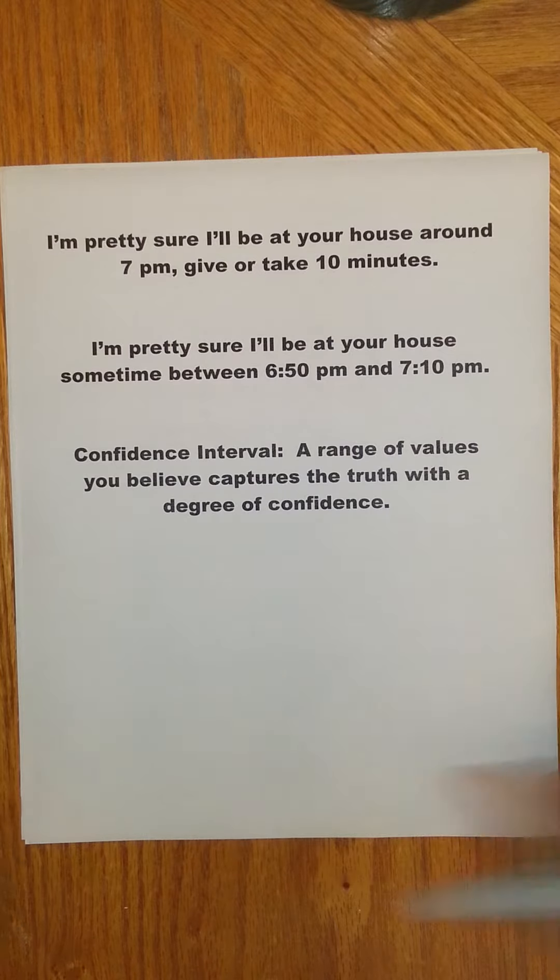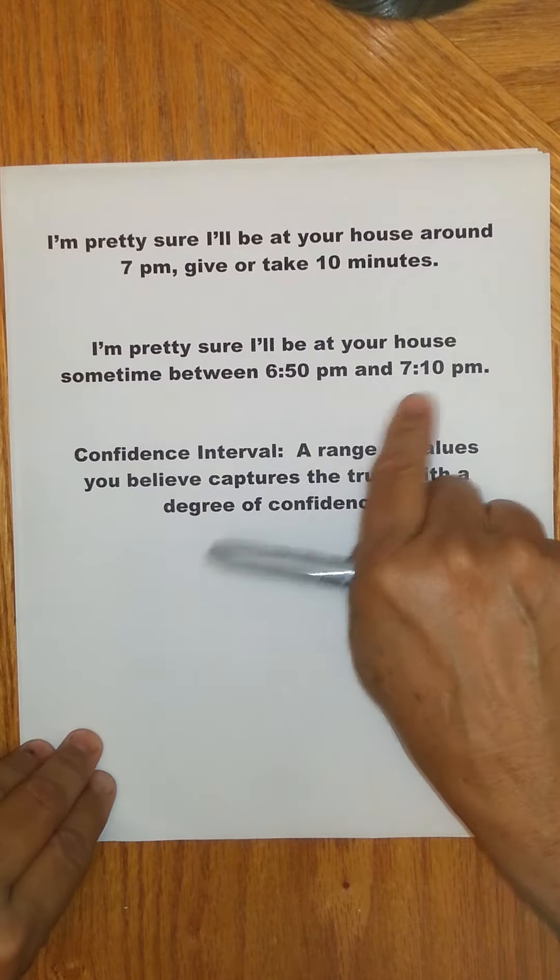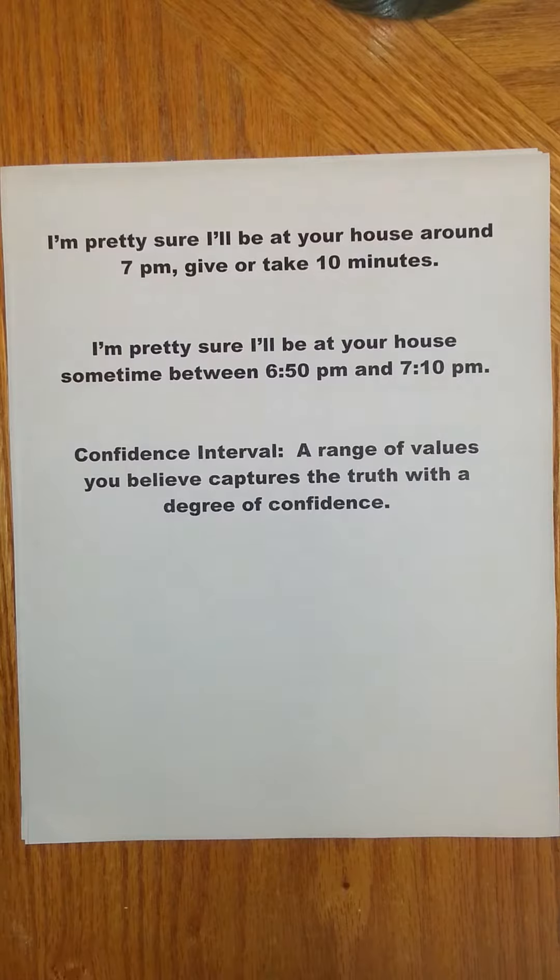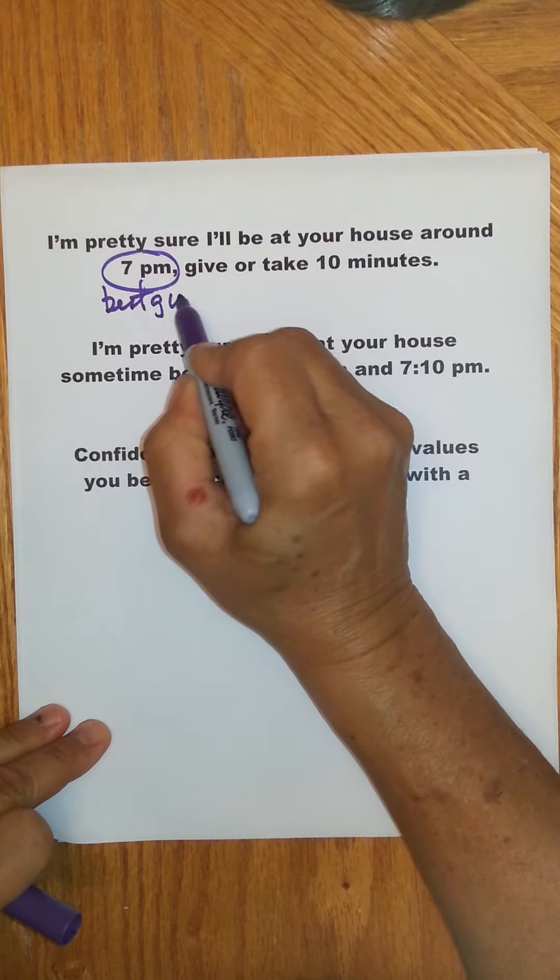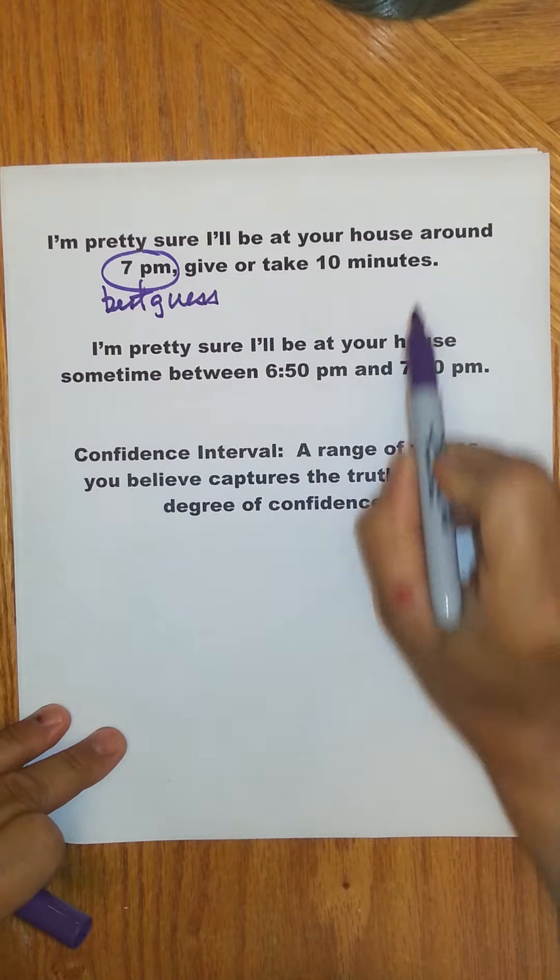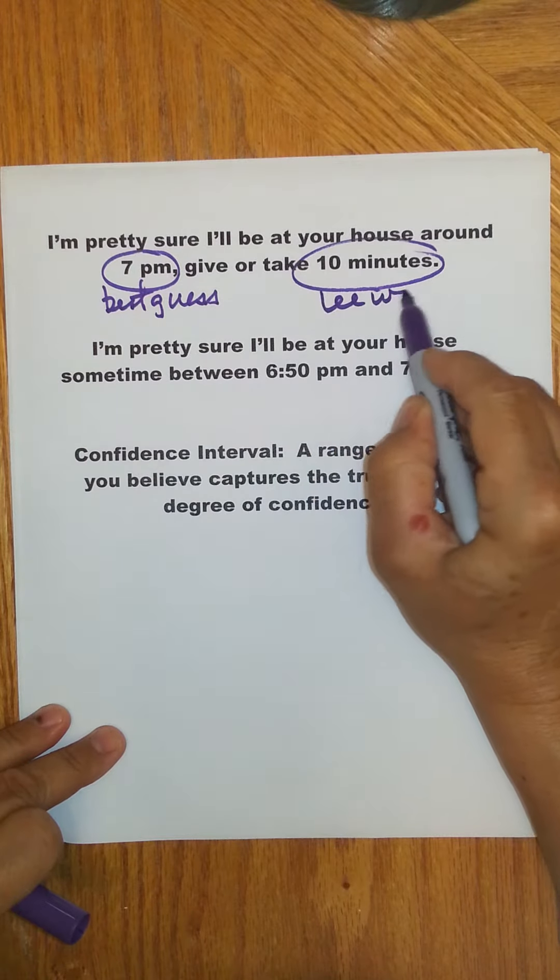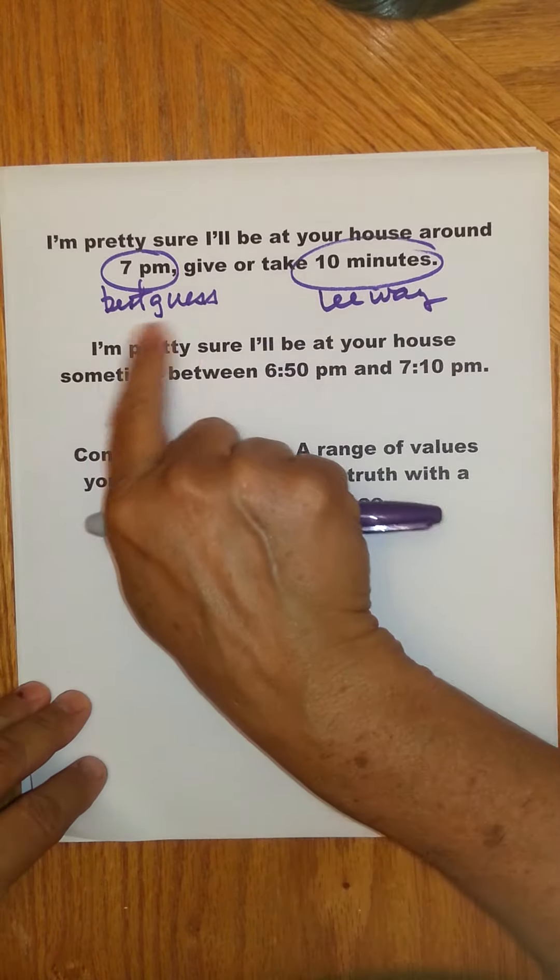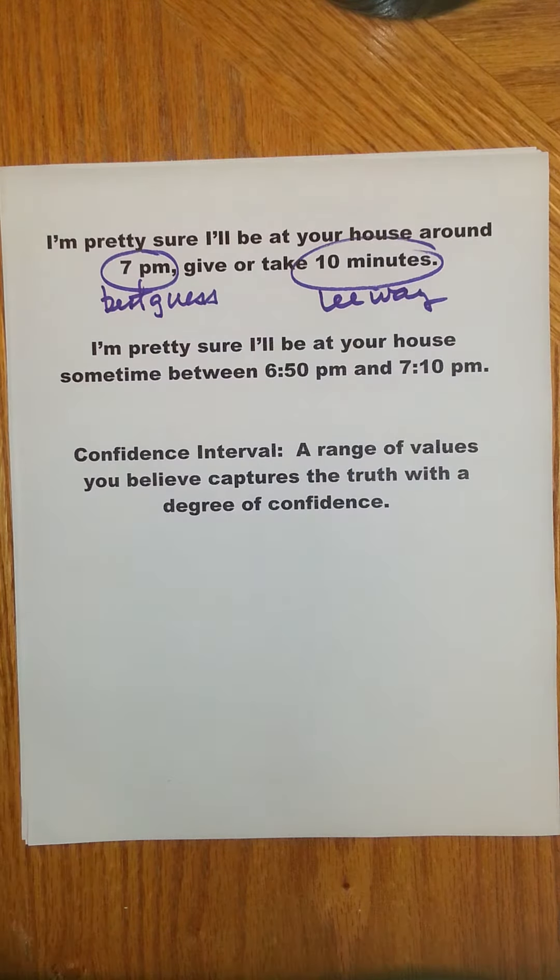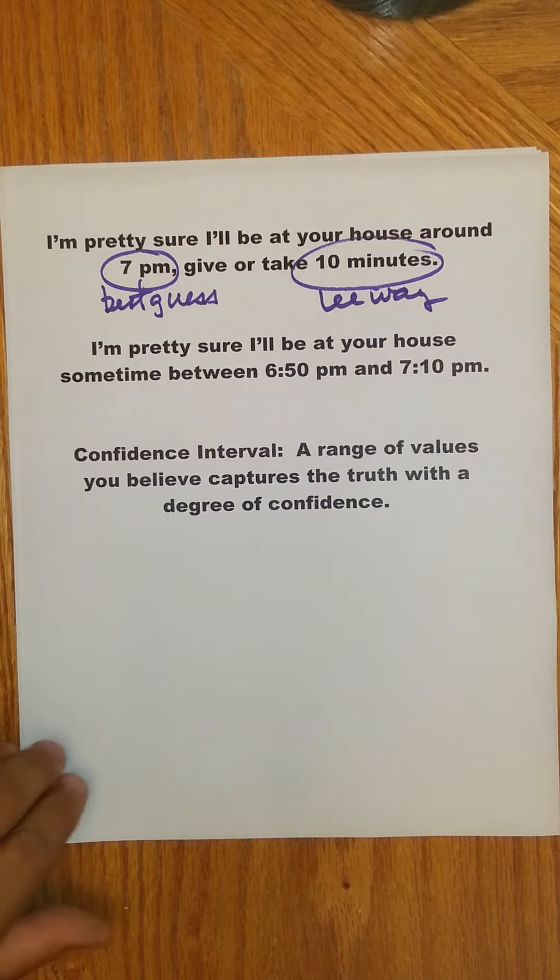So in your case, you believe you're going to be there. Now how did you get that? Well, basically you started with a best guess, and that best guess was 7 p.m. And then what you did is you gave yourself a little leeway or cushion, 10 minutes, because you know you're probably not going to be exactly there at 7 o'clock. But how did you come up with your best guess? Well, you knew what time you were getting off work, you probably know a lot about the traffic patterns and so on and so forth. And then gave yourself a little leeway based on that.